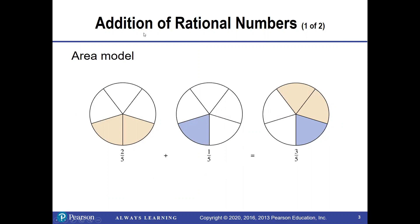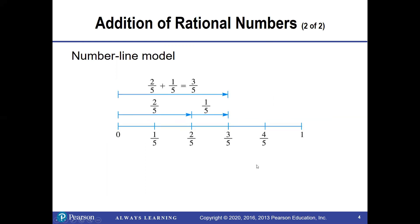We start with just taking a regular addition. This is known as the area model. The first circle is two-fifths shaded. The second one is one-fifth. If we put those together — because they have the same number of pieces, five each — we can put all three together and get three-fifths. We also have the number line model.